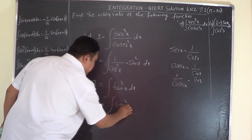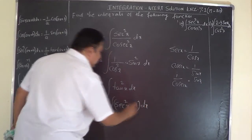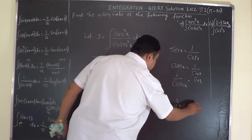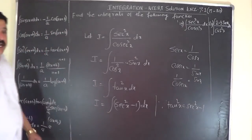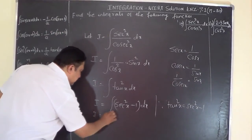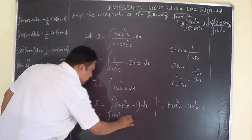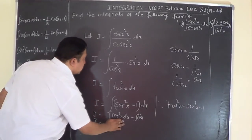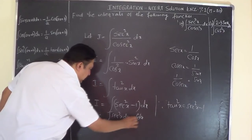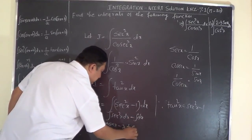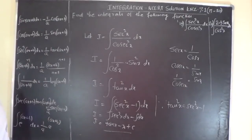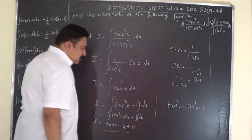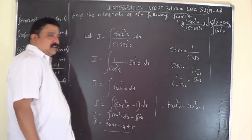We use the trigonometric identity: tan squared x equals secant squared x minus 1. So I equals integral of (secant squared x minus 1) dx, which separates into integral of secant squared x dx minus integral of 1 dx. The answer is tan x minus x, plus the constant of integration. That is the solution for problem 19.